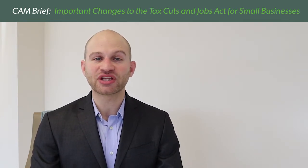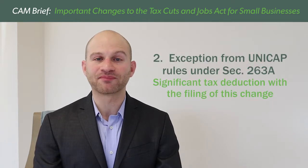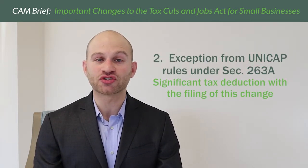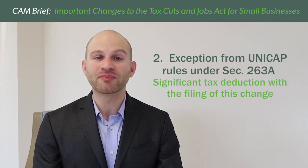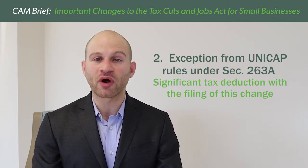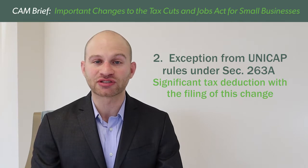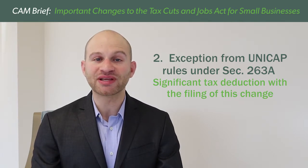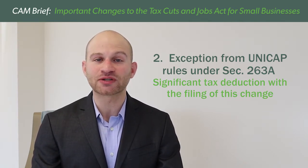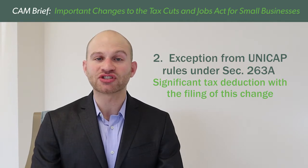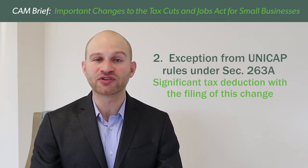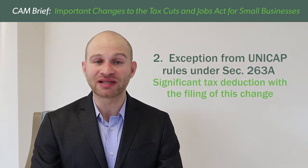The second change is the exception from Unicap. This is one of the easiest and favorite changes to implement. Small business taxpayers are no longer required to deal with the complicated Unicap calculations. There will potentially be a significant tax deduction with the filing of this change, as all previously capitalized additional inventory costs will be expensed with the filing of the change.